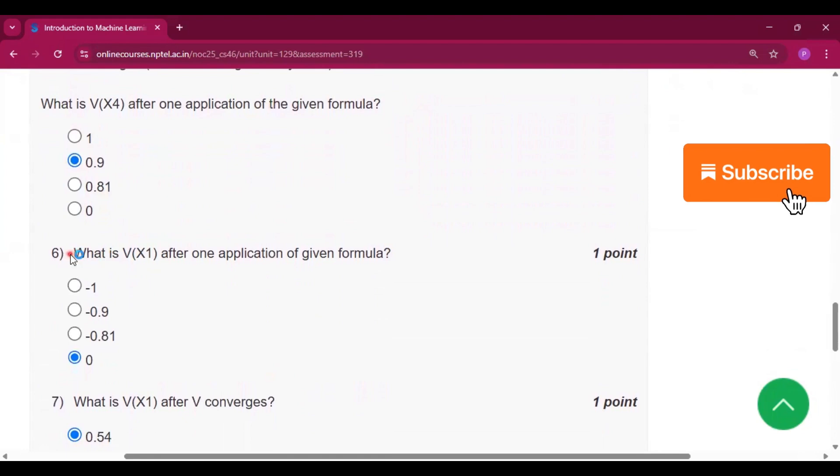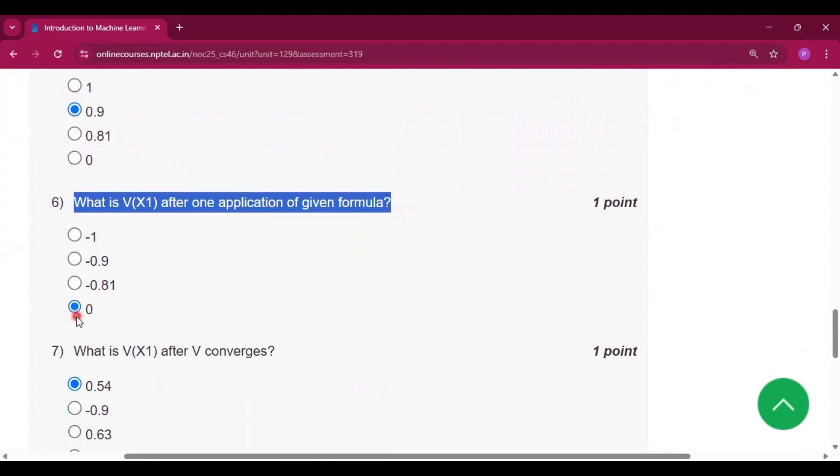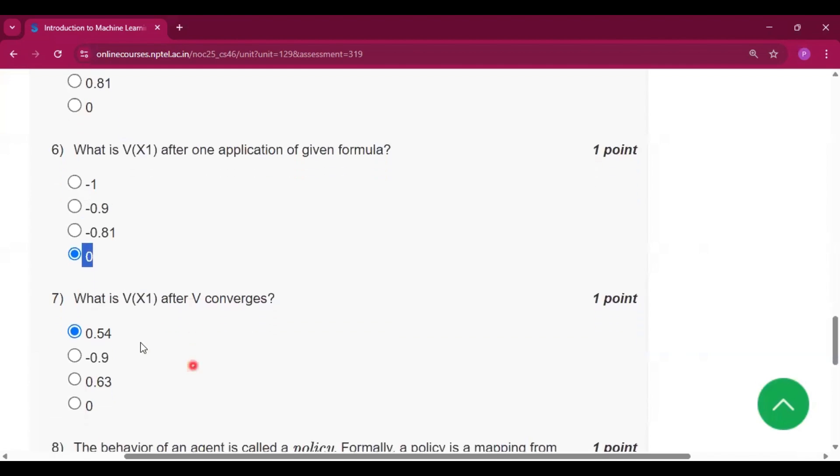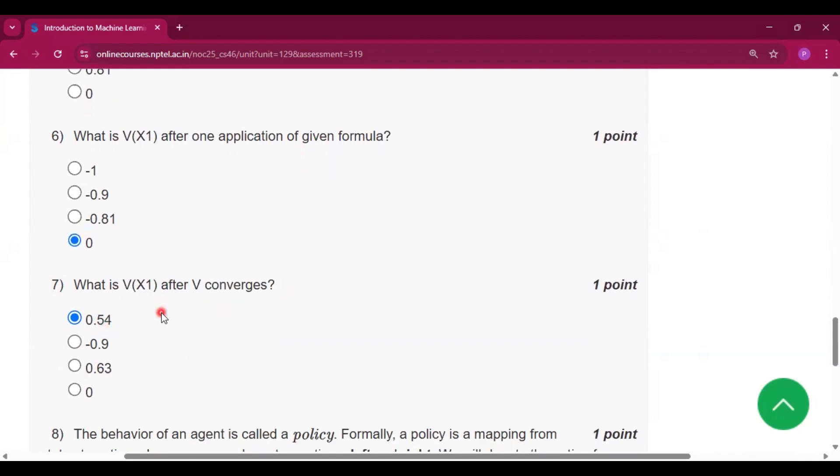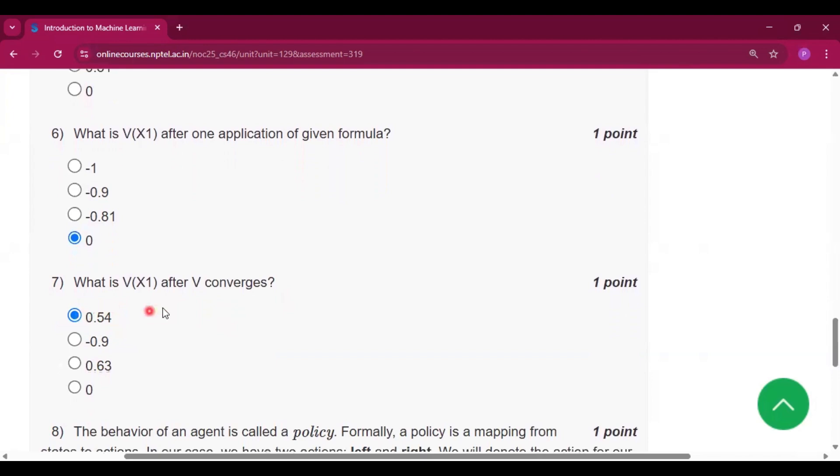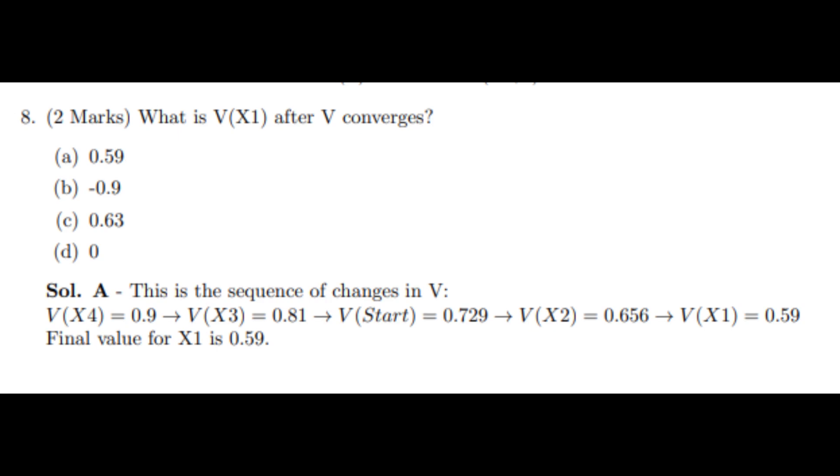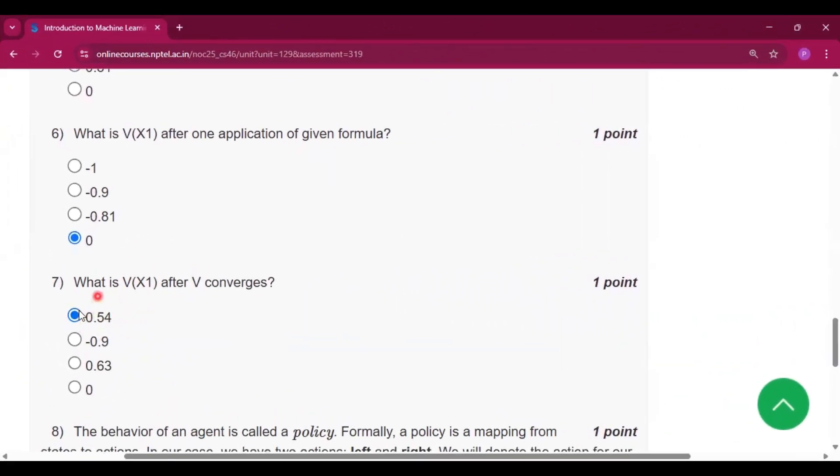For question number six, the answer will be 0, and for question number seven, the answer will be 0.54. But for this question, I think NPTEL did a mistake by giving a wrong option. I think the answer will be 0.59 because it came in the previous year as well and the answer is 0.59 there, so I think 0.59 will be the answer and here 0.54 is given in place of that.